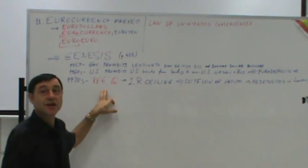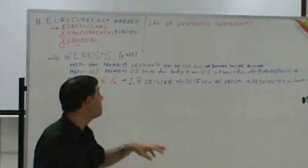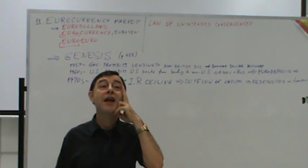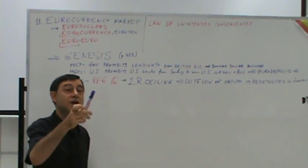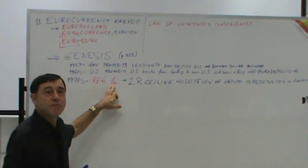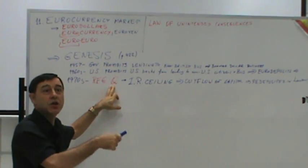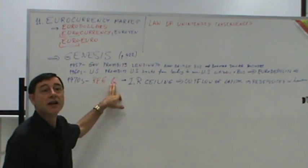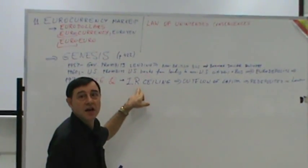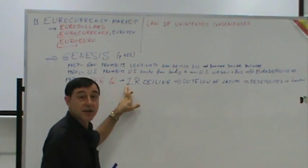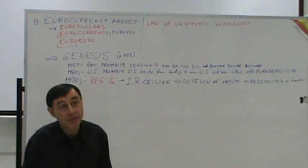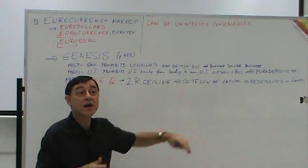All depositors rush to move money out of US banks into London or other European centers. Not only was there an underlying shortage of capital to begin with, but now capital is fleeing the country. This crushes American banks and American lending, leading to a major crisis in the 70s. Eventually the government realizes it made a devastating mistake. The interest rate ceiling results in capital redeposited elsewhere.